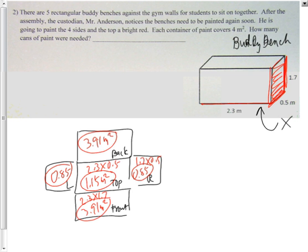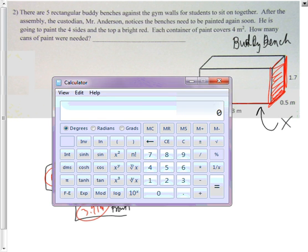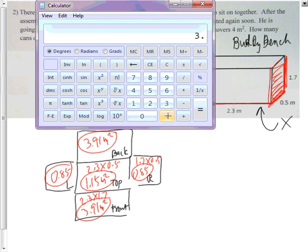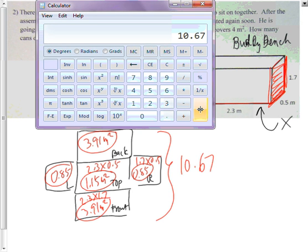A buddy bench has those five faces. If I add those all together: 3.91 times 2 for the front and back, plus the top, plus the left and right. The total surface area is 10.67 square meters.